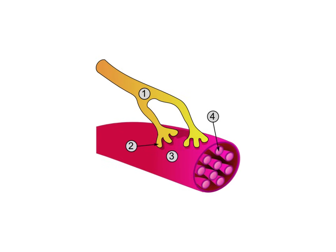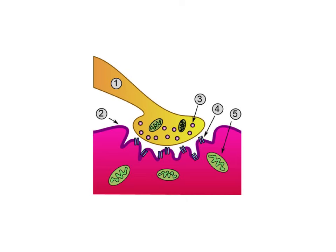The neuromuscular junction is basically the intersection between a muscle fiber and a nerve. We're talking about this area shown there in the white box. If you can imagine zooming in on this area, you would see the nerve terminal entering the muscular junction. We talk about things like a presynaptic and postsynaptic area. This is no different than any other neural connection, but it's neuromuscular because it connects a neuron to a muscle.